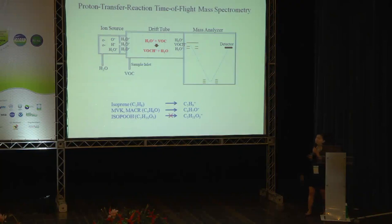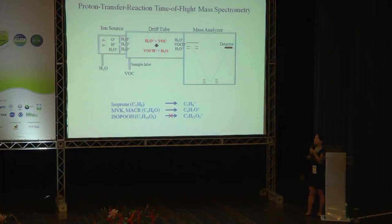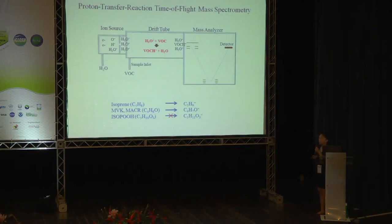However, this soft ionization technique is actually not that soft. What we have found is that for isoprene hydroperoxides, the protonated ion, as far as I know, has not been detected in any laboratory study or in the field. But in this study, it would be very useful if we can measure isoprene hydroperoxides by PTR analysis. So, what do isoprene hydroperoxides fragment to in PTR?